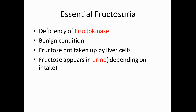The first fructose-related disease is essential fructosuria, which involves a deficiency of fructokinase. This is a benign condition in which fructose is not taken up by liver cells, and therefore fructose appears in the urine. The amount of fructose in the urine depends on dietary fructose intake.